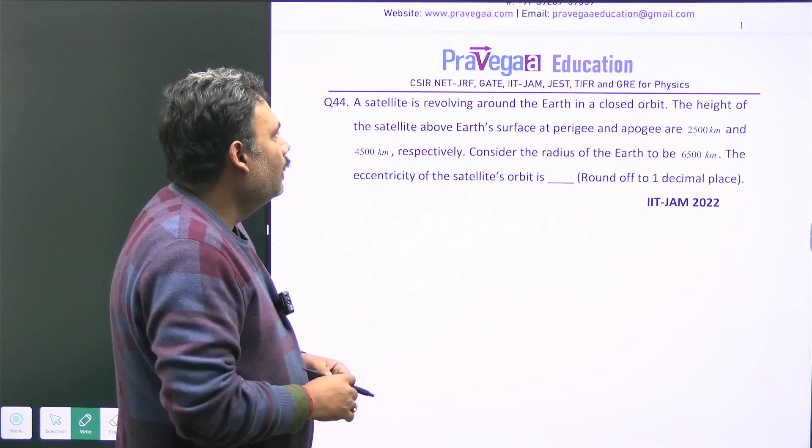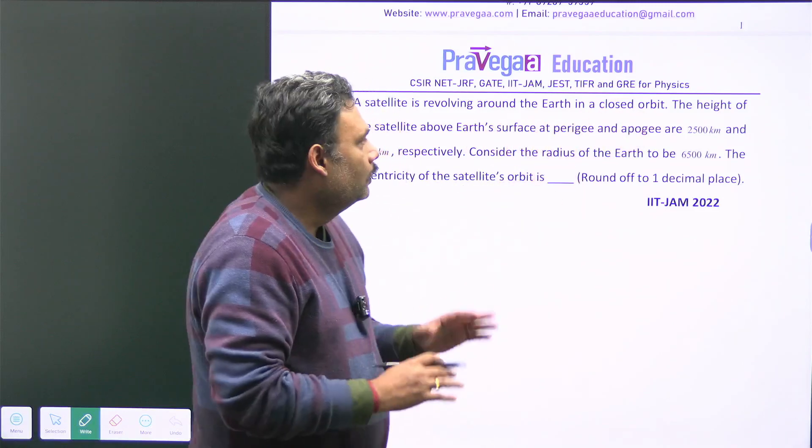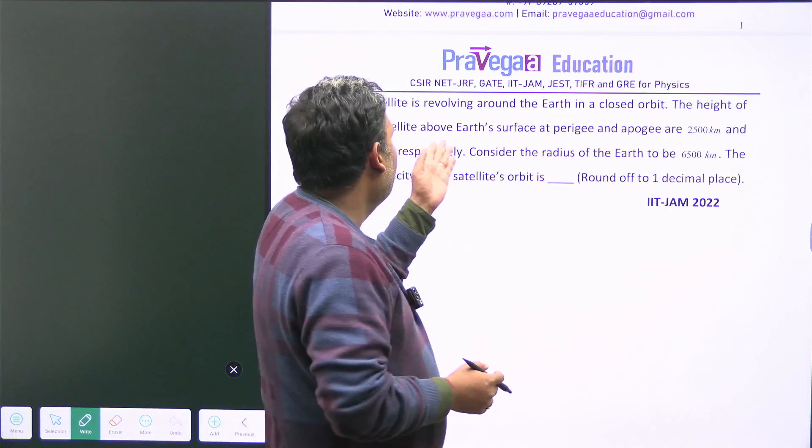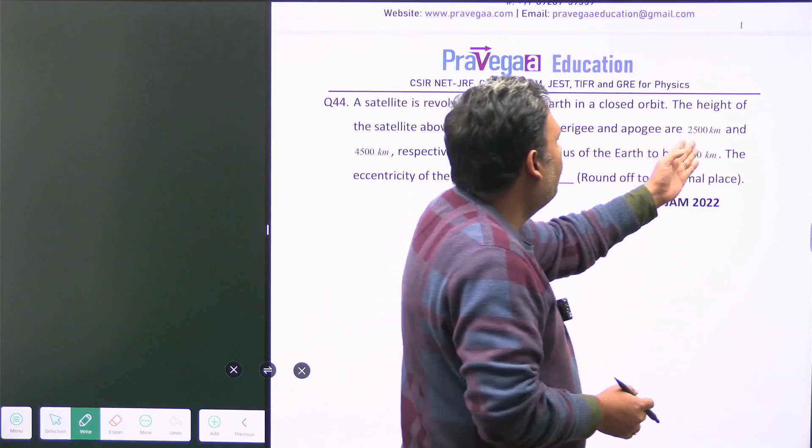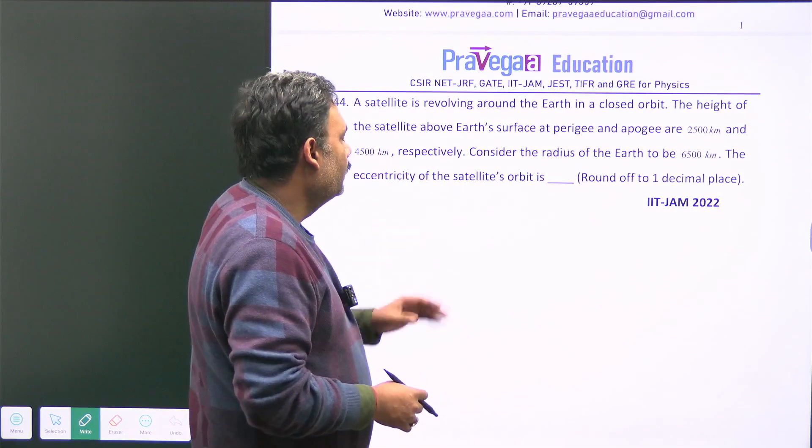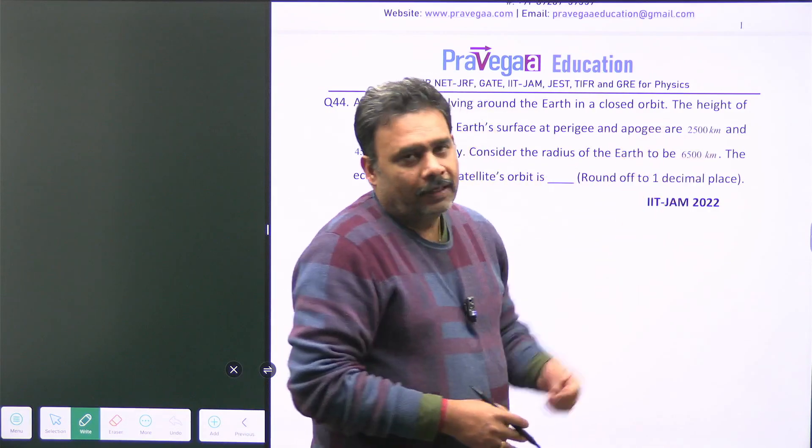So what is this? A satellite is revolving around the earth in a closed orbit. So it is a closed orbit, the height of the satellite above the earth's surface at perigee and apogee are 2500 km and 4500 km respectively. And it is given that the radius of earth is 6500 km.